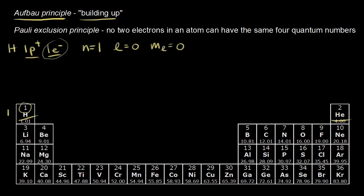l equal to zero tells us we're talking about an s orbital, and the single value of ml means only one orientation for an s orbital. An s orbital is shaped like a sphere, and this three-dimensional volume is the most likely region we're going to find this one electron. So the electron for hydrogen is going to go into an s orbital in the first energy level.